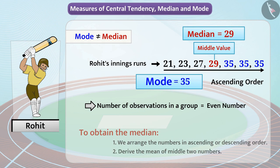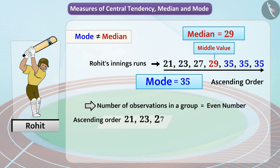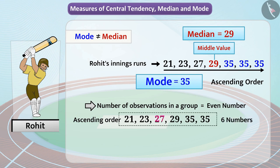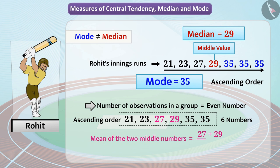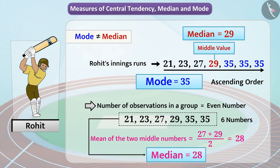For example, for the set of observations 21, 23, 27, 29, 35, 35 — numbers 27 and 29 are the two middle numbers. To find the median for this data, we first derive the mean of the two middle numbers: 27 plus 29 divided by 2 equals 28. Now that we know the mean of these two numbers is 28, we can deduce that the median of these observations is 28. Even though 28 is not part of the data provided, it divides the group of data into two equal parts.